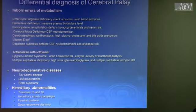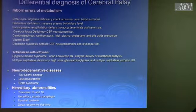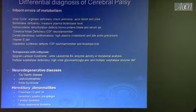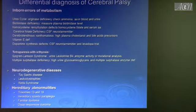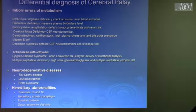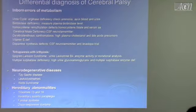Neurodegenerative disorders in the differential include Tay-Sachs, leukodystrophy, Rett syndrome, hereditary abnormalities such as trisomy 13/18, hereditary spastic paraplegia, familial dystonia, and dopa-responsive dystonia. You don't need to memorize these — keep them in the back of your mind. When the MRI is normal, there's no history of HIE or prematurity, and the kid is losing milestones, something is off and you need to consider these possibilities.